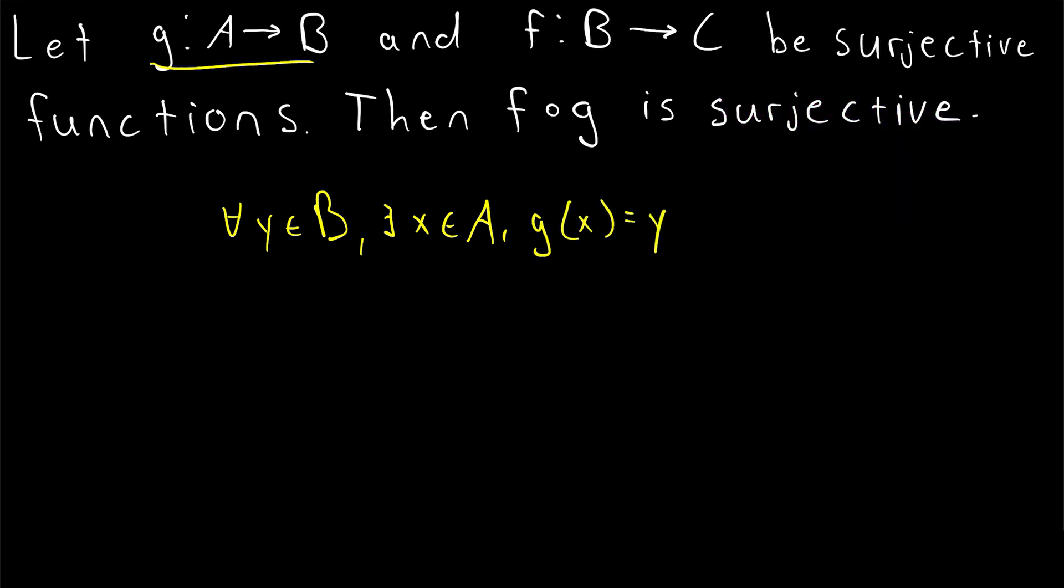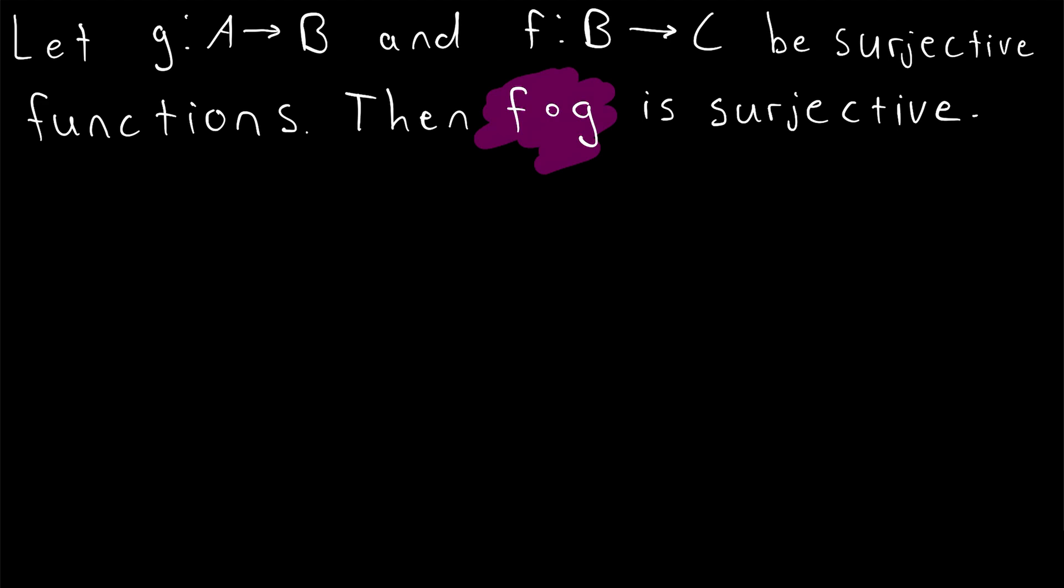So if a function is surjective, that means that for any element in its codomain, there is some element in its domain that maps to that codomain element. So that's what we want to prove about the composition F of G.